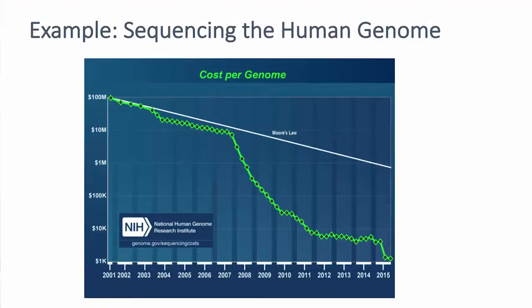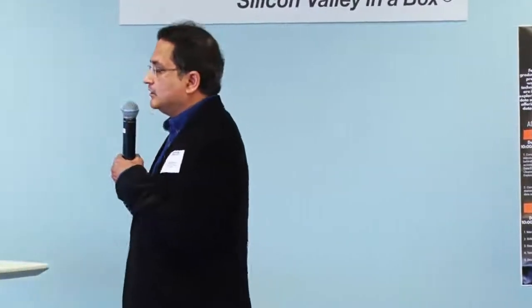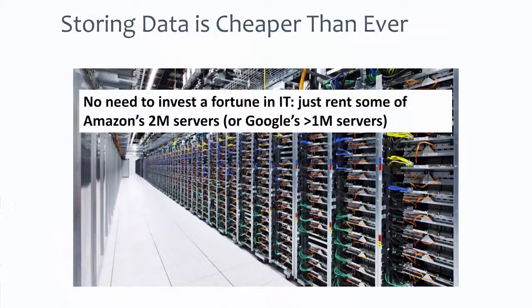If you look at the sequencing of the human genome, data from the National Human Genome Research Institute shows that the cost is also decreasing. Most of you are familiar with Moore's law, which says that the number of transistors in a dense integrated circuit is doubling every two years, so computing is becoming cheaper and cheaper. You don't need to invest a huge amount in IT infrastructure today — you can rent any of Google's or Amazon's data center servers.